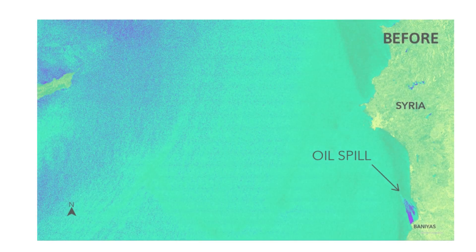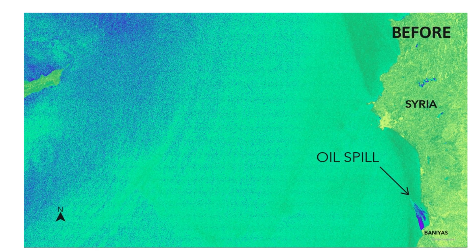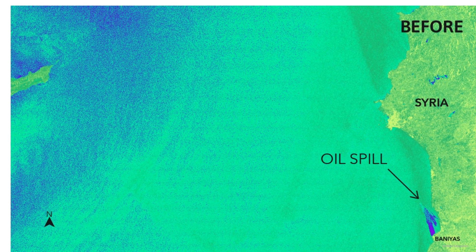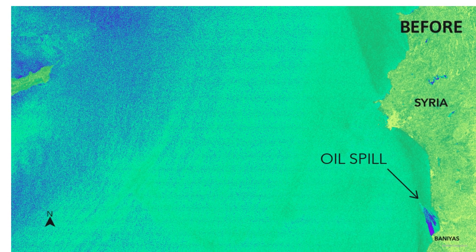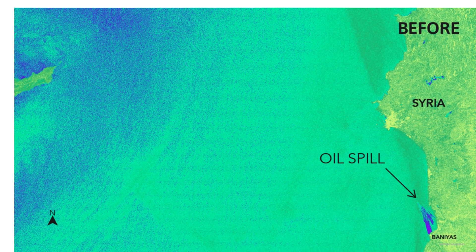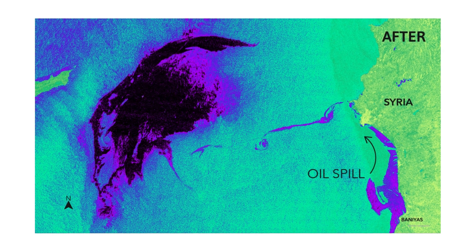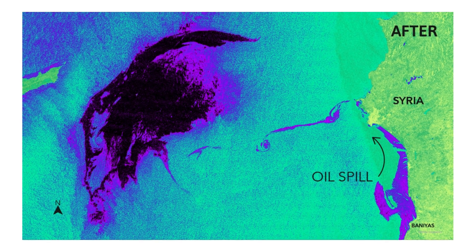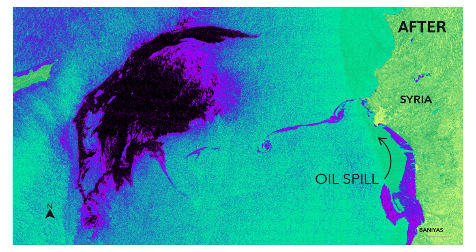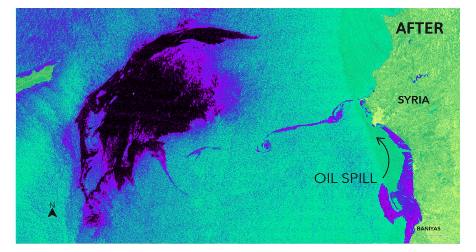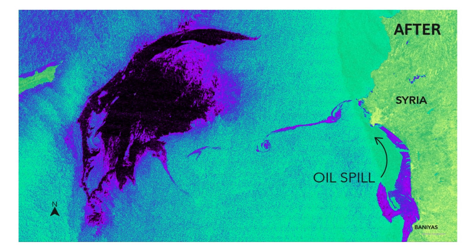2. Oil Spills. On August 23, 2021, an oil spill occurred from the Banias Thermal Station, a major oil refinery in Banias, Syria. The map shows the spatial extent of the oil spill, black and magenta color, on August 24, 2021 and on August 30, 2021.